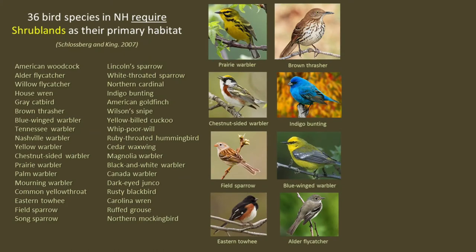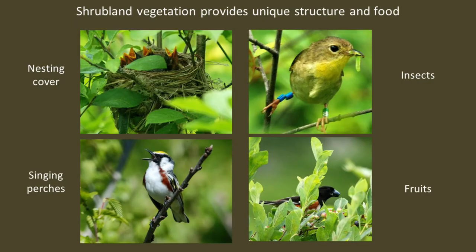In New Hampshire, we have about 36 species of birds that require shrublands as their primary nesting and foraging habitat. These include prairie warblers, brown thrashers, chestnut-sided warblers, indigo buntings, field sparrows, blue-winged warblers, eastern towhees, and alder flycatchers. Collectively, we refer to these 36 species as the shrubland birds. These birds require shrublands for the specific habitat structure that provides them with cover for nesting and perches for singing, abundant insects for raising their young, and abundant fruits for raising their young and preparing for migration.